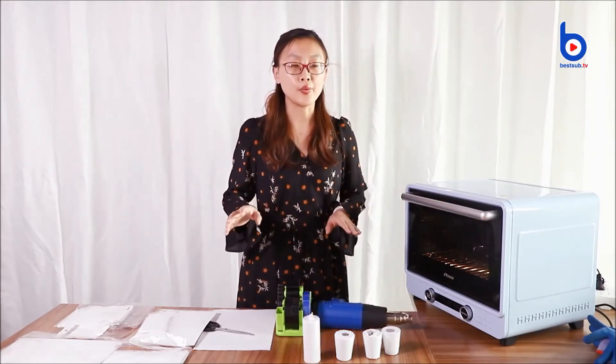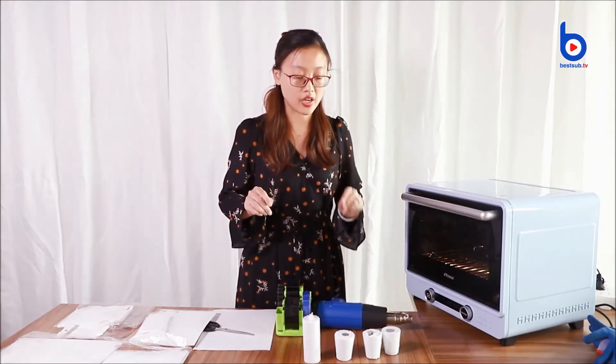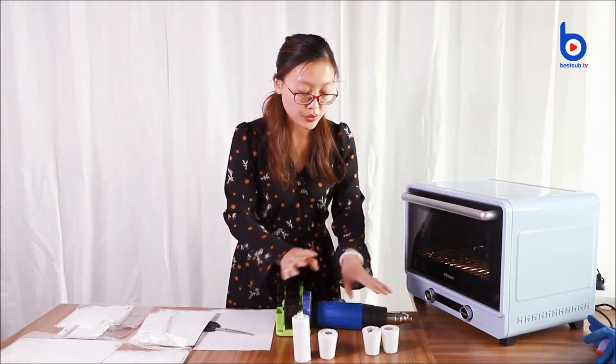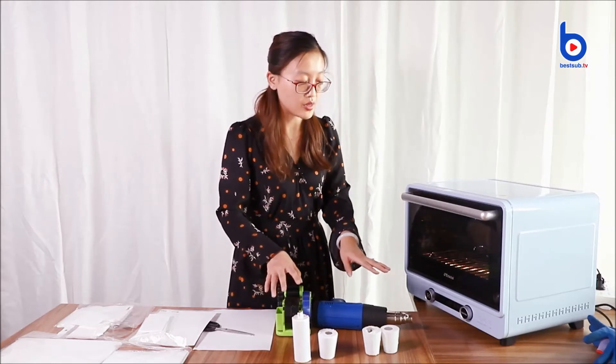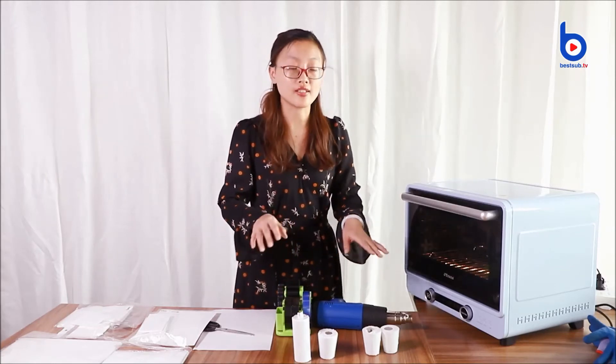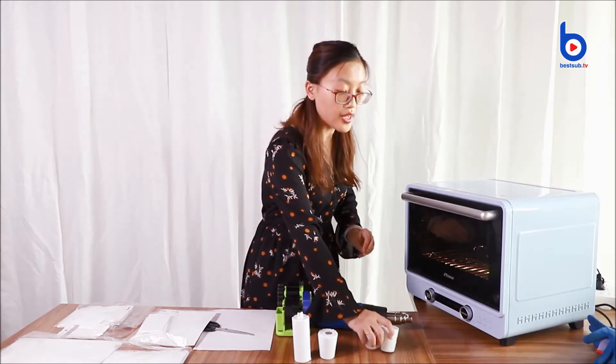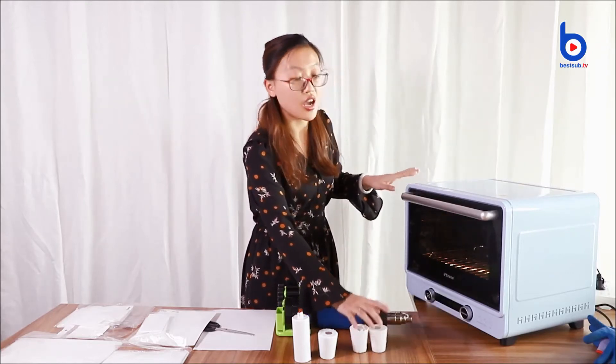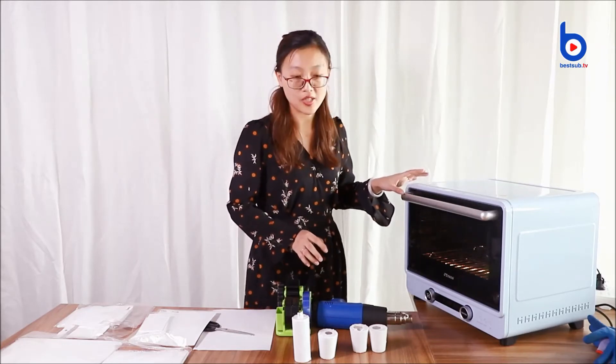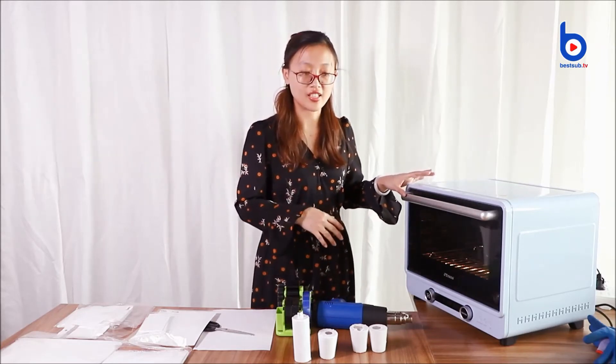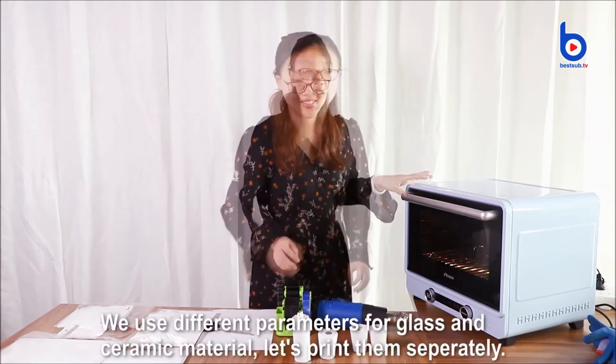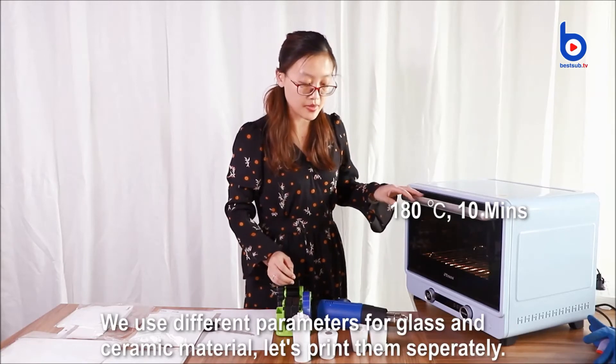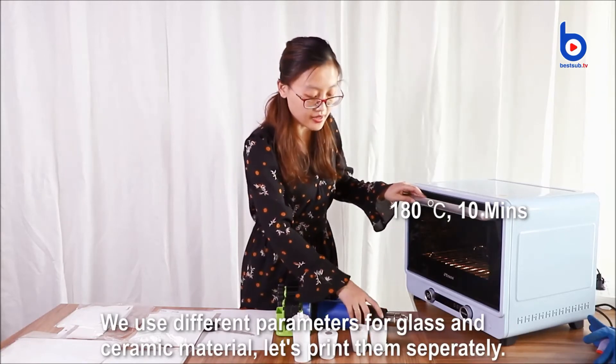As you just saw, we have two kinds of materials. One is glass and the other one is ceramic. So we need to put it into different ways because they use the different parameters. First we will do the heat transfer on the glass one. Today we will use our ISMAT oven machine. You also can be looking for these items through our website. For glass items, we normally use 180 degrees and 10 minutes. Let's put it inside.